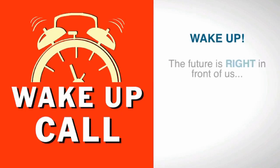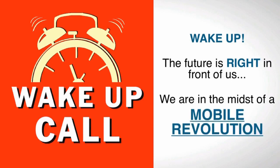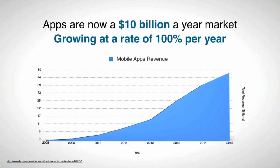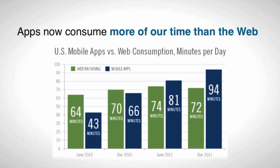Wake up! The future is right in front of us — we are in the midst of a mobile revolution. So what is going to power all these smartphones? It's going to be apps. Angry Birds alone has over 600 million downloads, beating Nintendo DS including all of their games combined. Apps are now a $10 billion a year market, growing at a rate of 100% per year. Apps now actually consume more of our time than the web — you spend more time inside apps than you do on the internet.